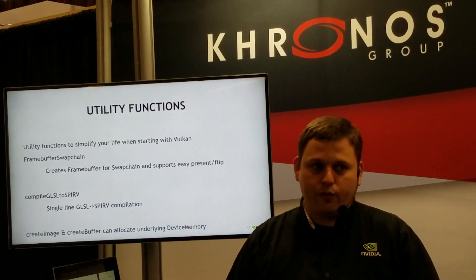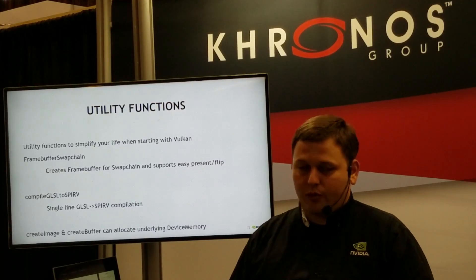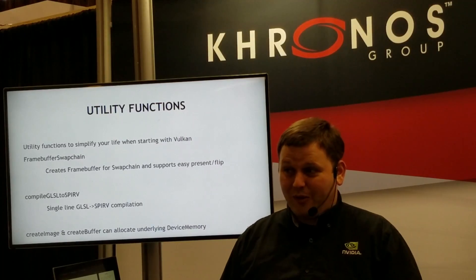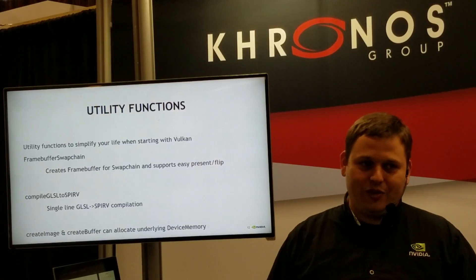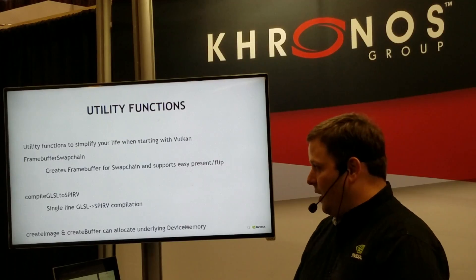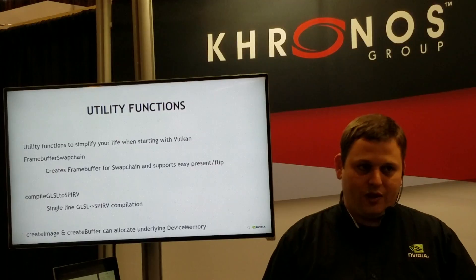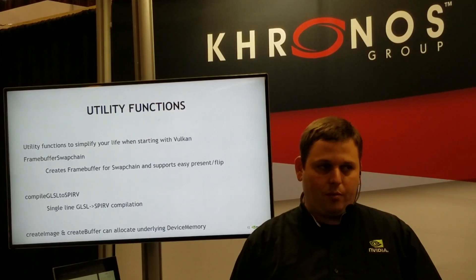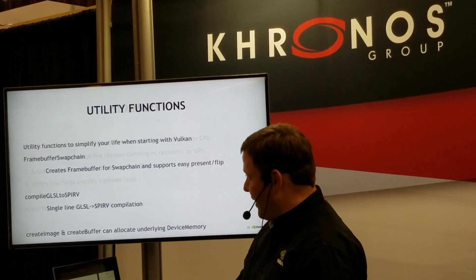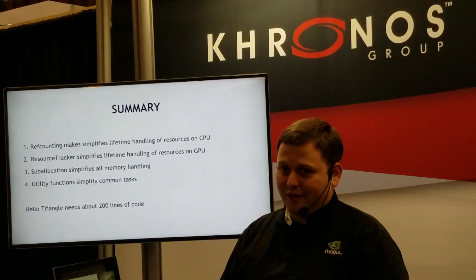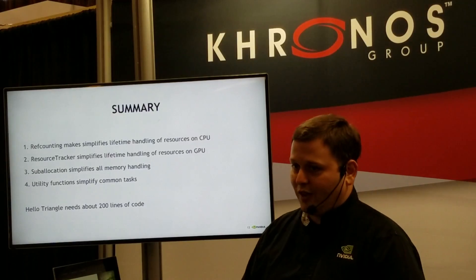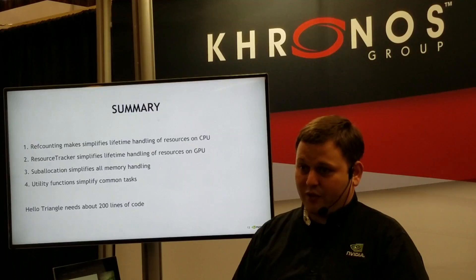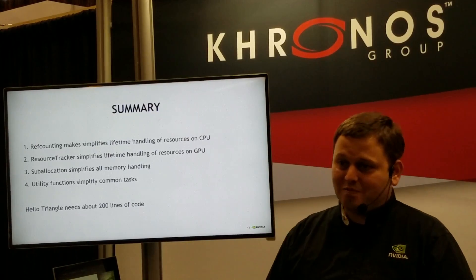Finally, we started implementing utility functions to make your life easier when starting out. For example, initializing a framebuffer and the corresponding swap chain takes a lot of lines of code, so we made classes where you can initialize something you can render on and present it in just a few lines. We also have a single-line interface to GLSLang to compile your GLSL code to SPV code, and functions that automatically create the device memory you need when creating buffers or images. As a result, we now have a framework that simplifies your life through ref counting, resource tracking, sub-allocations, and utility functions — letting you write a Hello World triangle in about 200 lines of code instead of 1,000. Thank you for listening.